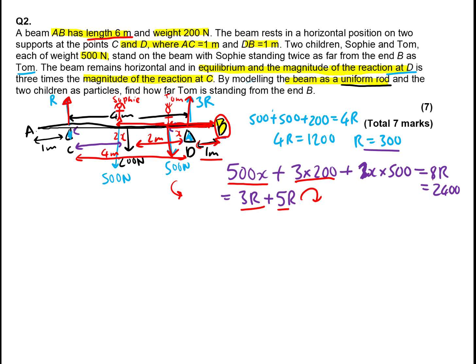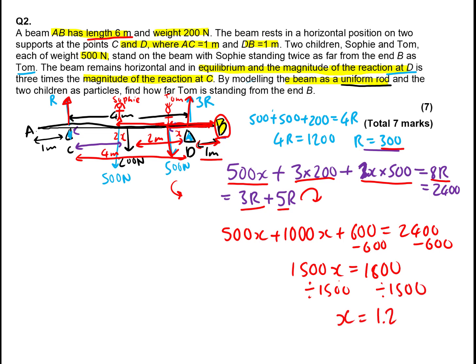So, what we get here, if we multiply this out, and this out, we're going to get 500X plus 1000X plus 600 is going to give us that 2400. Now, let's solve that. It's minus 600 from both sides. So, we're going to get 1800 equals 1500X. Now, when we divide out by 1500, we're going to get X equals 1.2. And in the context of this question, it has to be 1.2 meters. So, from here to here, that's 1.2 meters where Tom is. And that's a 7 mark question completed. Hopefully, that makes sense.